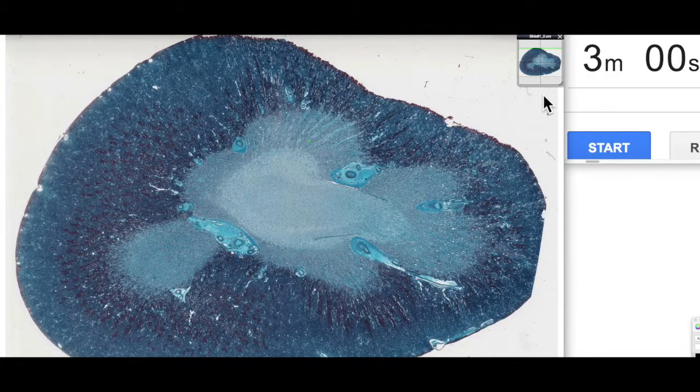Remembering simple means one cell layer thick, cuboidal means that the cells are as tall as they are wide, so little cube-shaped lining cells. Usually we find them in ducts and tubules, and that's where we're going to start today.